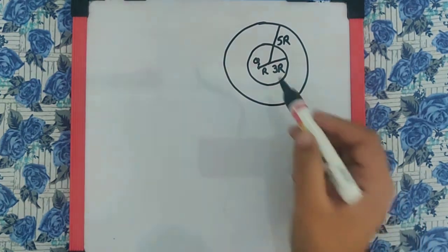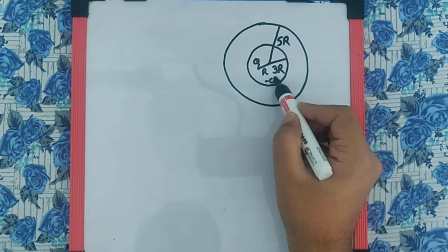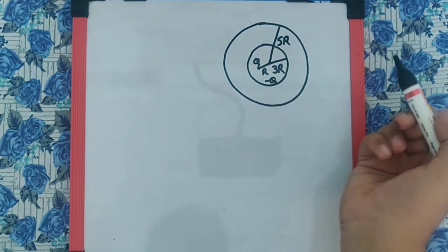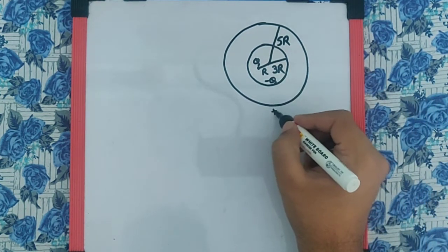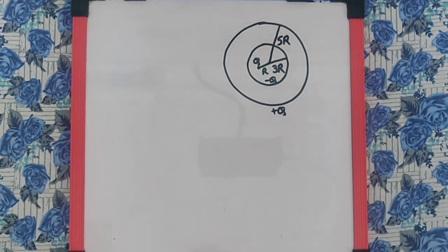Now very clearly this q will induce a negative q on the inner surface of the spherical shell and therefore plus q on the outer surface of the spherical shell by the process of induction.